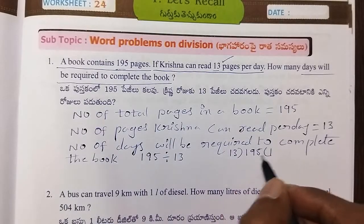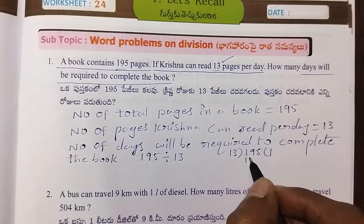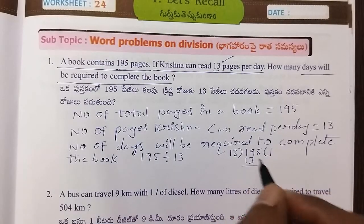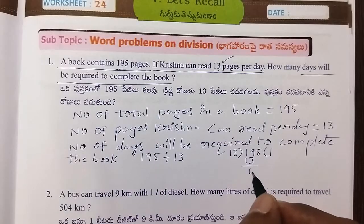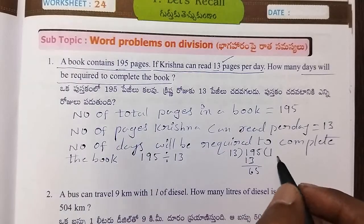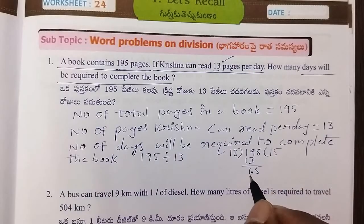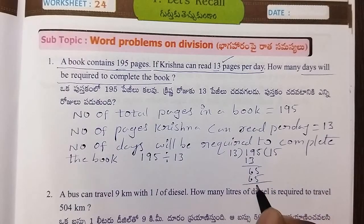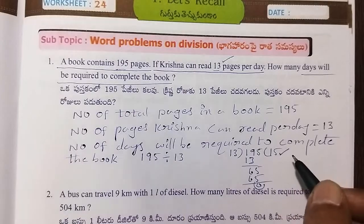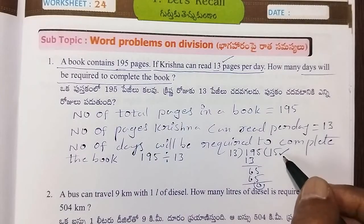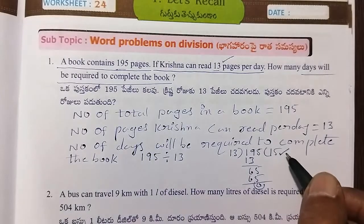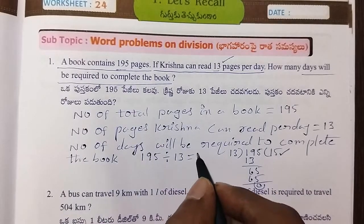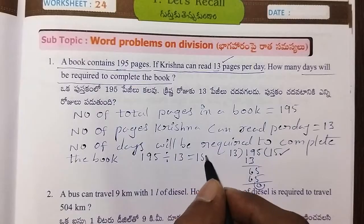13 ones are 13. Now, working through the division: 195 divided by 13 gives 15. So, 15 days will be required to complete the book. That's right.